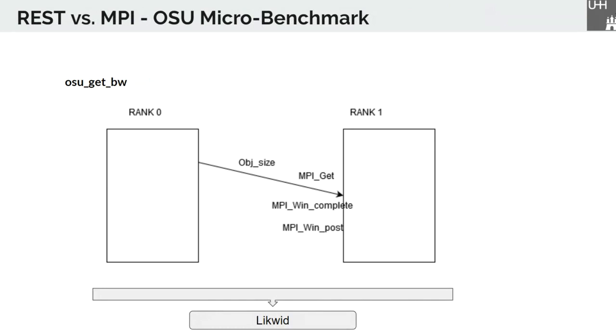Here we see the bandwidth test. It's very similar to the latency test and is carried out by the original process, calling a fixed number of back-to-back MPI_Gets and then waiting on a synchronization call, MPI_Win_complete for the completion. This process is repeated for several iterations and the bandwidth is calculated based on the elapsed time and the number of bytes received by the origin process.